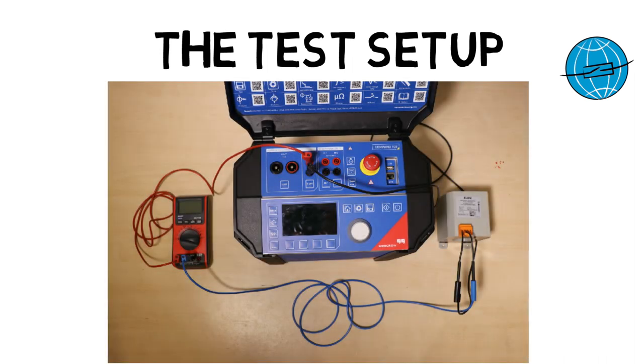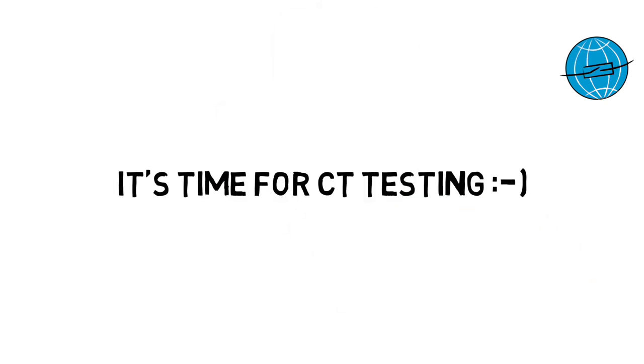In the real world it looks like this. I have connected the voltage output of my Compano with the terminals S1 and S2 of my core and inserted my cheap multimeter from the hardware store directly into the current path. I would say it's time for testing.